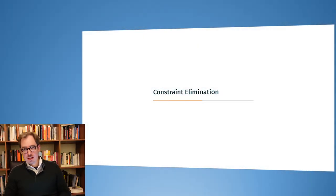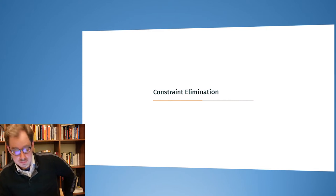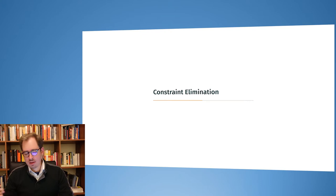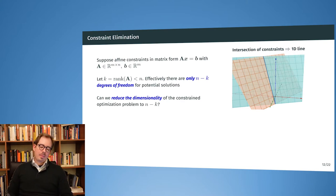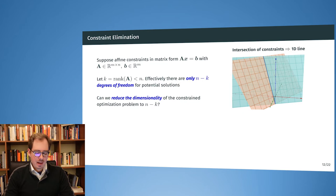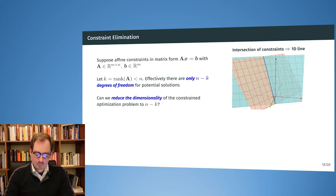Now on to the first technique of solving equality constraints: constraint elimination. We want to get rid of the equality constraints and construct an unconstrained optimization problem, totally ignoring them by writing everything in a form where we can ignore them. The solution has to lie in the intersection of these hyperplanes, and this motivates us to consider explicitly only the solutions that lie in this intersection.